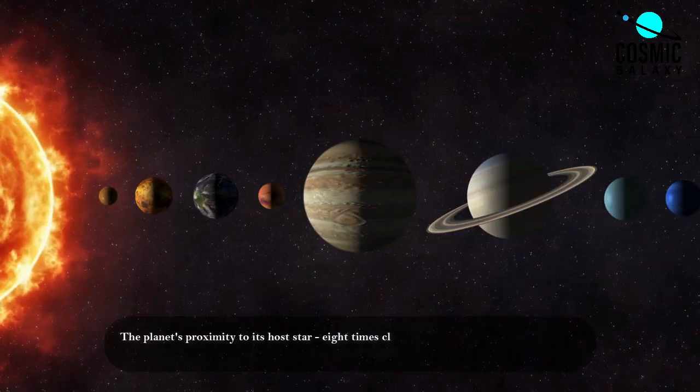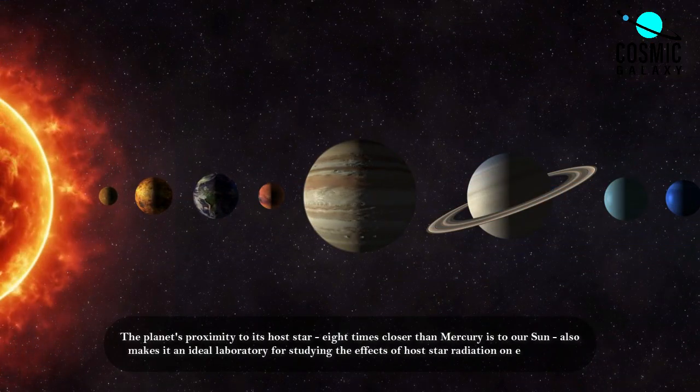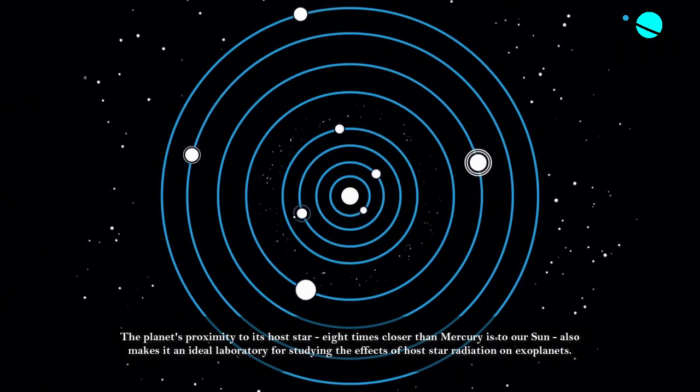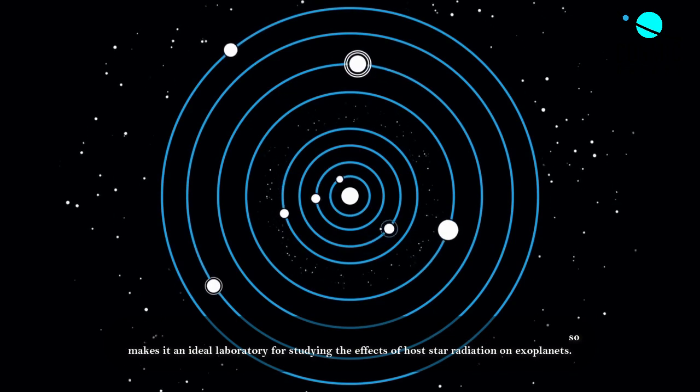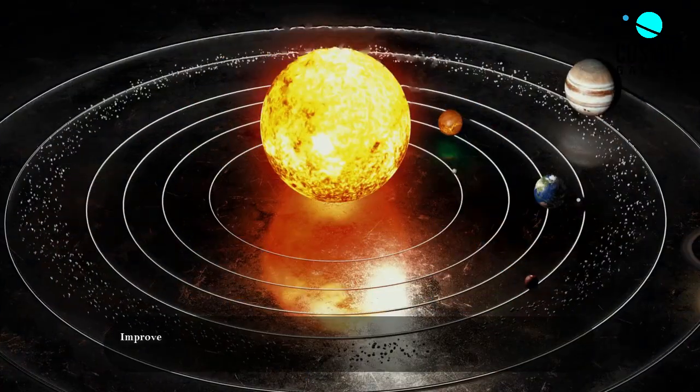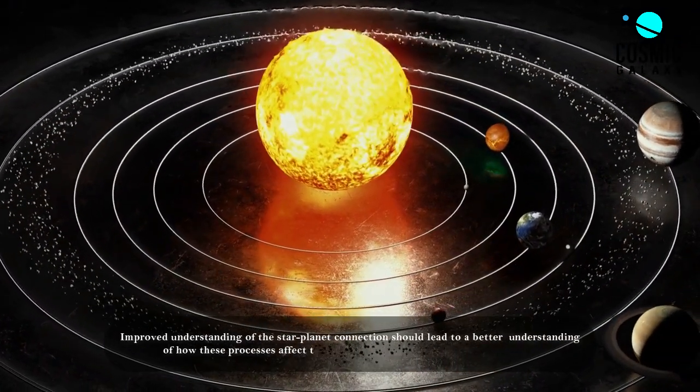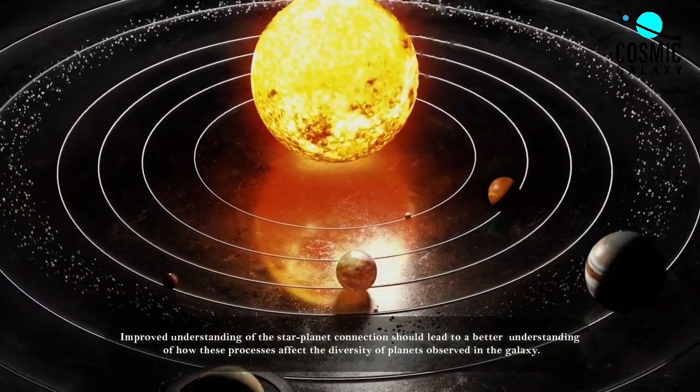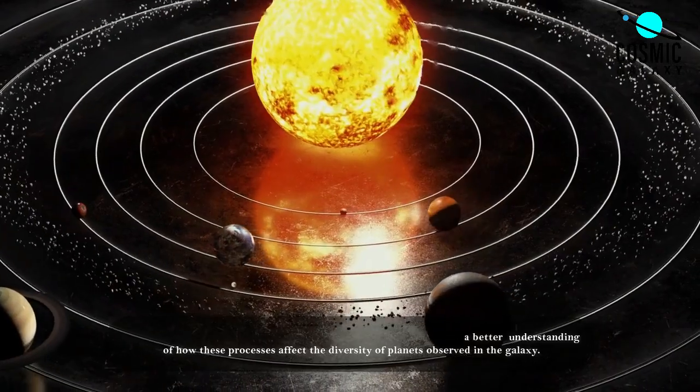The planet's proximity to its host star, eight times closer than Mercury is to our Sun, also makes it an ideal laboratory for studying the effects of host star radiation on exoplanets. Improved understanding of the star-planet connection should lead to a better understanding of how these processes affect the diversity of planets observed in the galaxy.